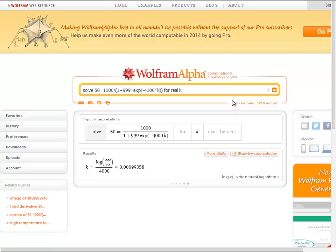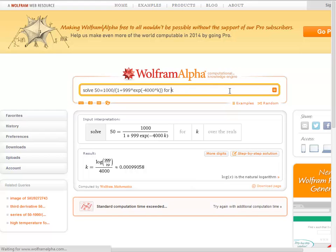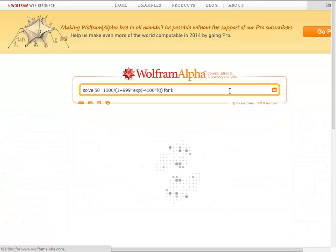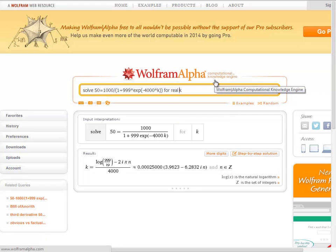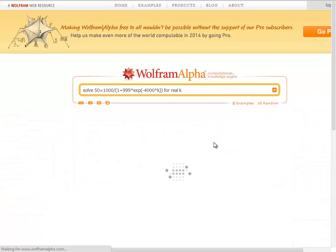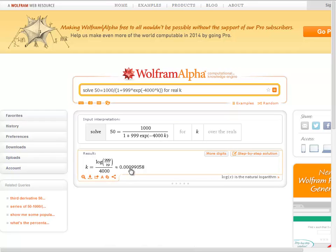Alright, so you can see what I did there to modify the answer. You may have noticed whenever I typed in solve, 50 equals 1,000 over 1 plus 999 times the exponential negative 4,000 times k for k. And I'll just show you one more time so you can see it. It gave me a complex answer. It gave me a complex answer. Right? You got the imaginary unit in there. So if you ever get that and you want to know the real answer, say solve the equation for real k. And there we get our answer which is 0.00099058. So I'm going to use four significant digits so I'll put 9906.